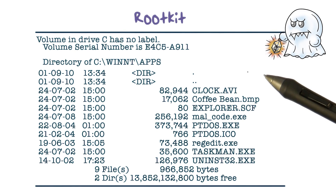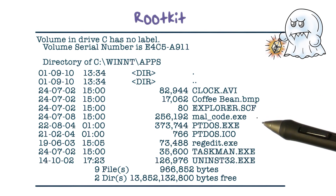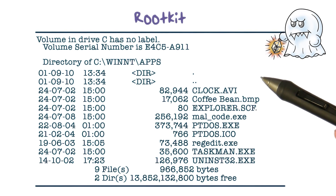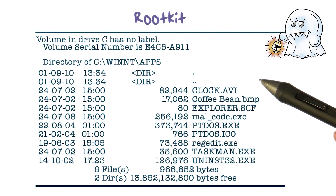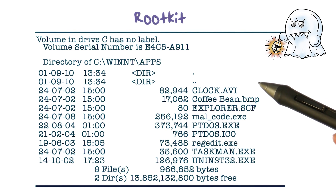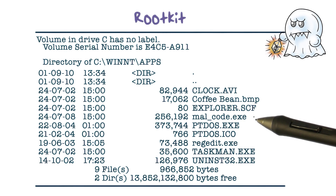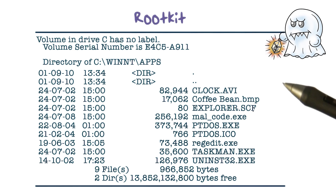Here is what an operating system will typically return when the user looks at files in a directory. Suppose the rootkit is not embedded in the OS yet. Then the OS will return all the files in the directory, including the malware file — say, malcode.exe. And this is the file that the rootkit will try to hide from the user.